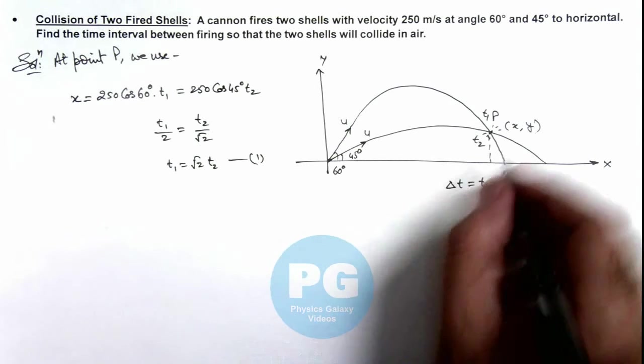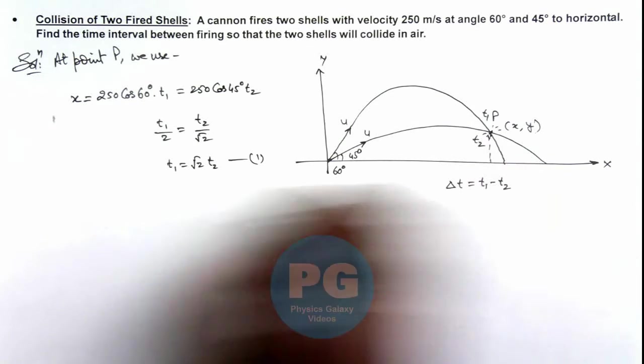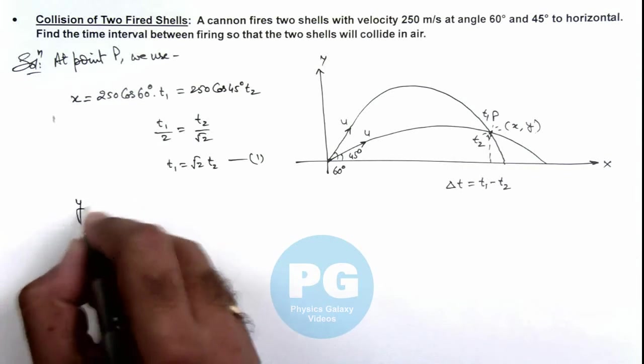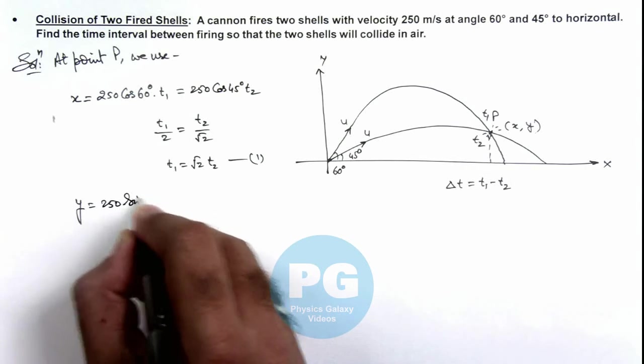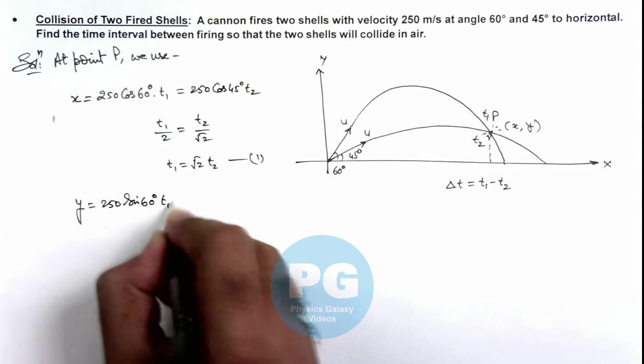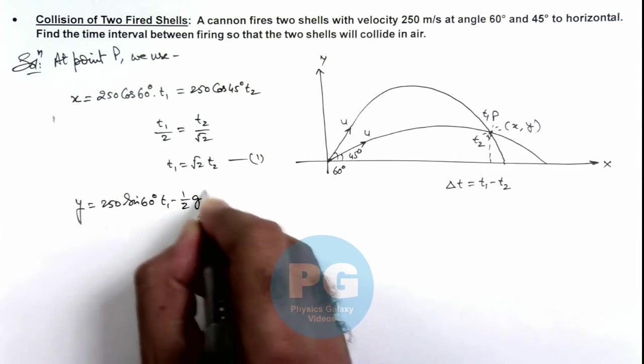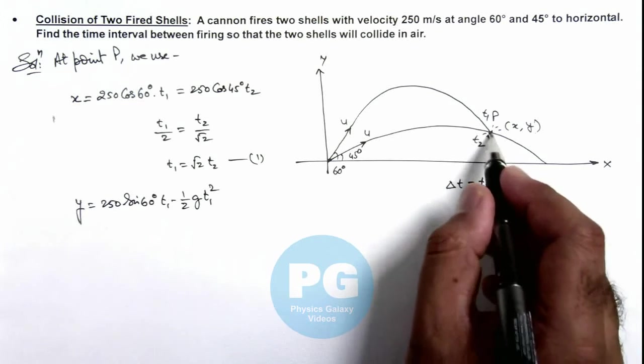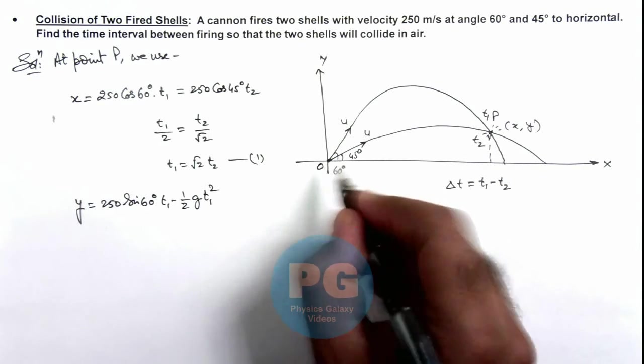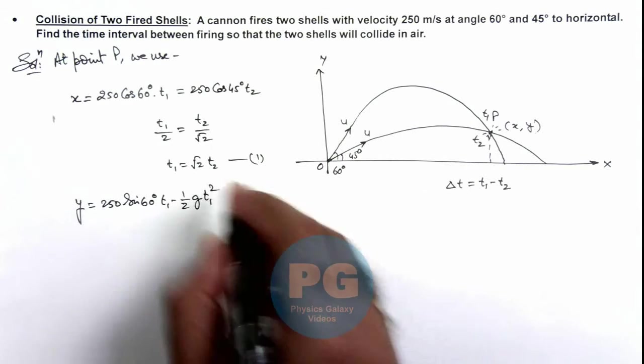And for the y coordinate of this point, we can write y = 250 sin 60° t₁ minus ½g t₁², that is the y component or the y displacement of particle from initial point for the particle thrown at 60 degrees.